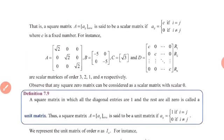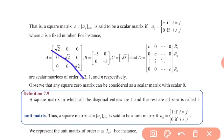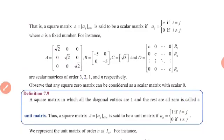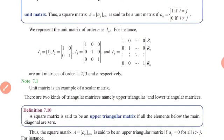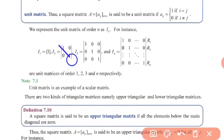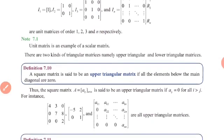Next is the unit matrix. A scalar matrix in which the same constant is 1 — that is, when i = j the entry equals 1 — is called a unit matrix (identity matrix). For example, the 1×1 unit matrix is [1], and the 3×3 unit matrix has 1s on the diagonal and 0s elsewhere.